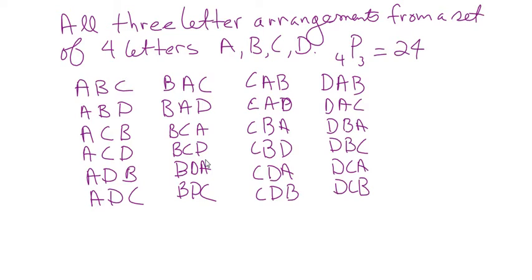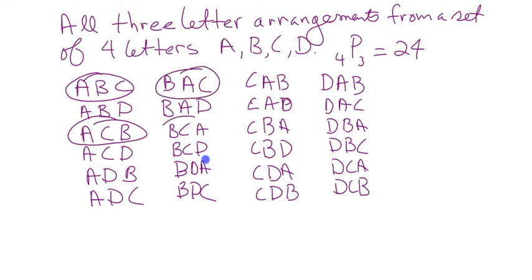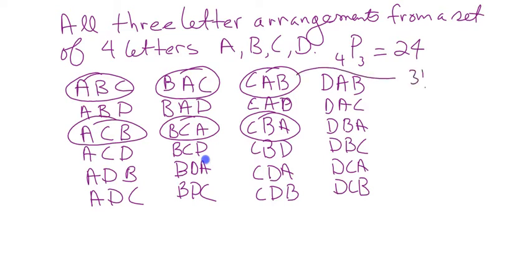But what if we just cared about A, B, and C being drawn — like these three letters are going to the movies? Then ABC is the same as ACB, right? Anything that has letters A, B, and C in it would be considered the same. And we know there are 3P3, or three factorial, ways of arranging those three objects.